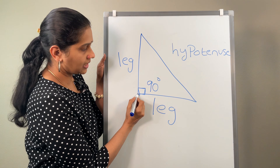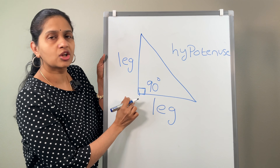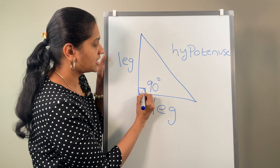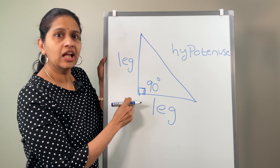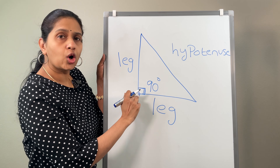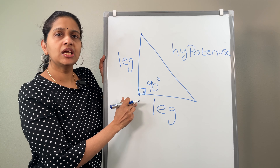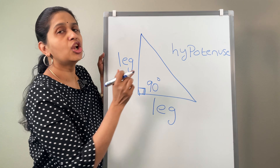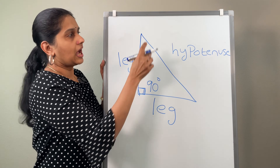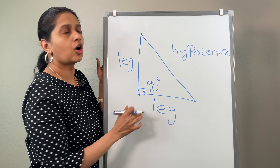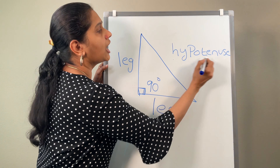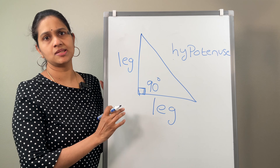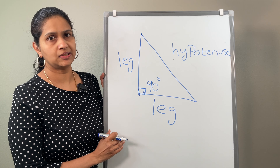These two sides are called the legs, and this is the 90-degree right angle. Always the side opposite to the 90-degree right angle is going to be the longest side, and the longest side is called the hypotenuse. So these are the major vocabularies you should know in a right triangle.